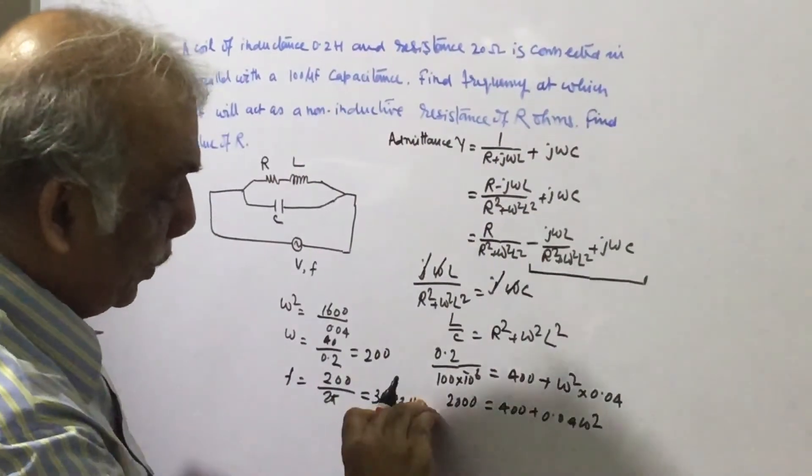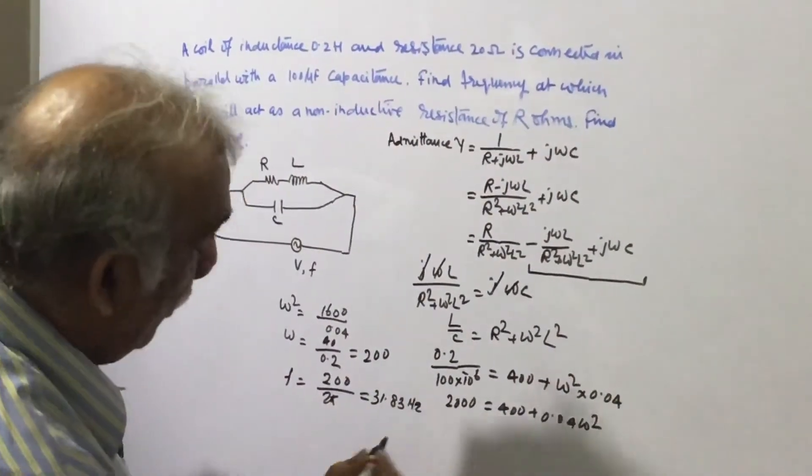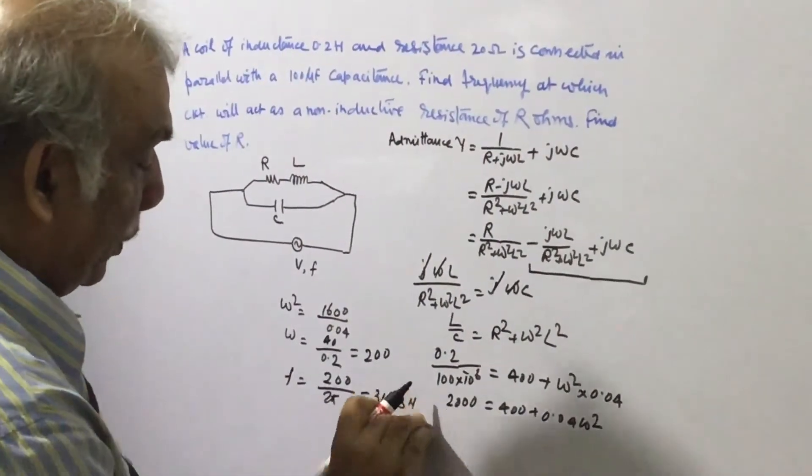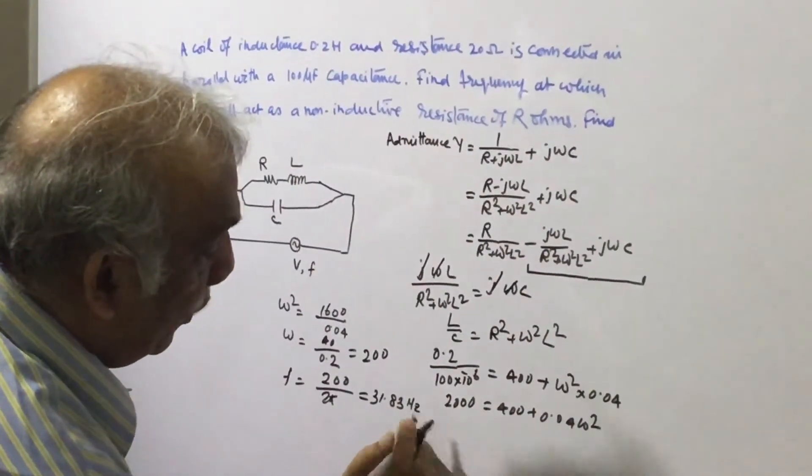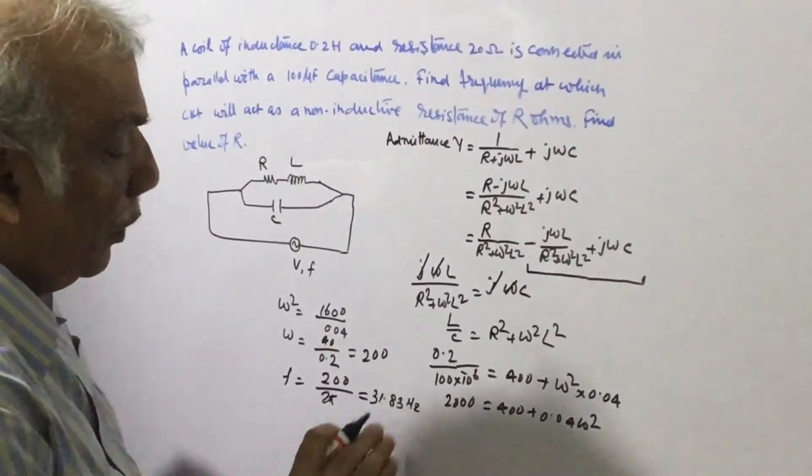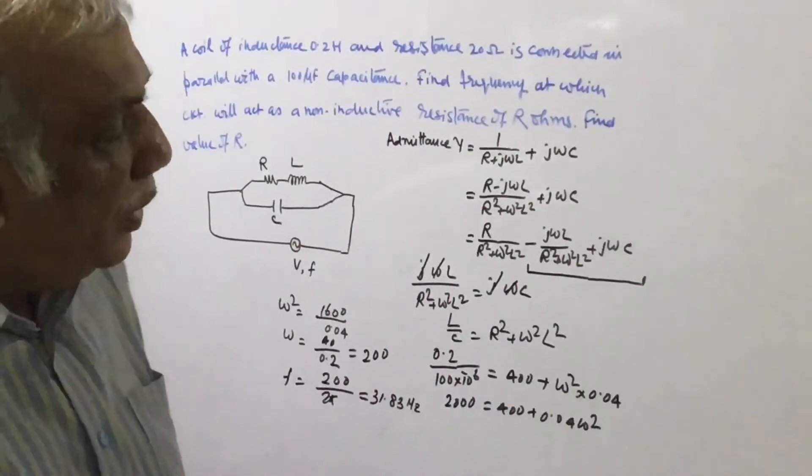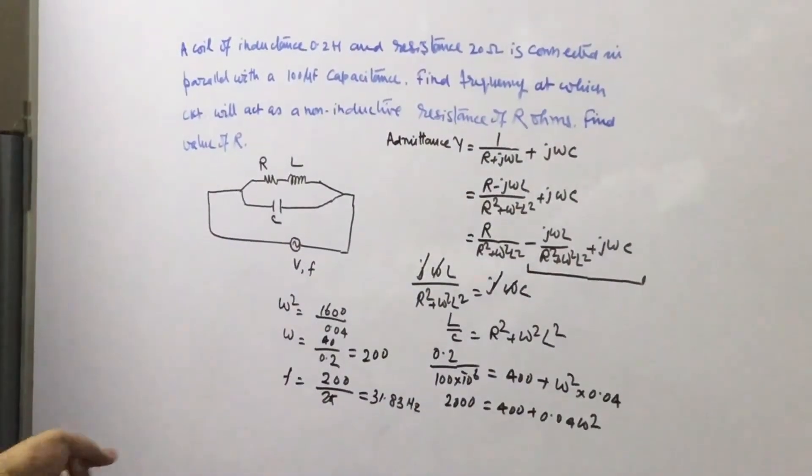So at frequency of 31.83 Hertz this circuit will become totally resistive or in other words we can say that resonance frequency of the circuit is 31.83 Hertz. Now we have to find out the value of R.